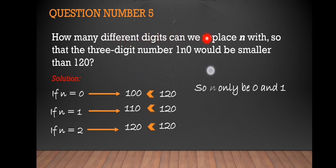The question asks for how many different digits. So n can only be 0 and 1. That's simply 2 different digits. So our answer is 2.